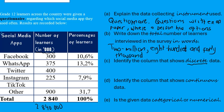Discrete data are whole numbers without decimals. The column showing the number of learners contains discrete data because these are whole numbers. So that is the column that shows discrete data.